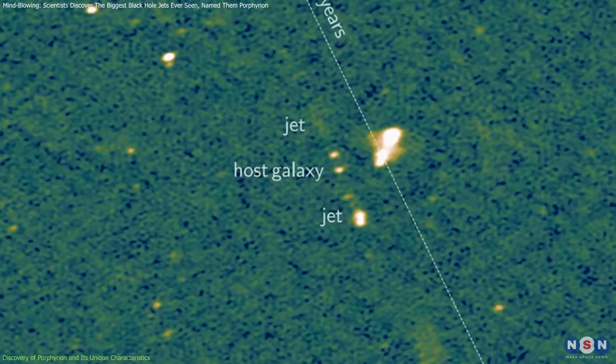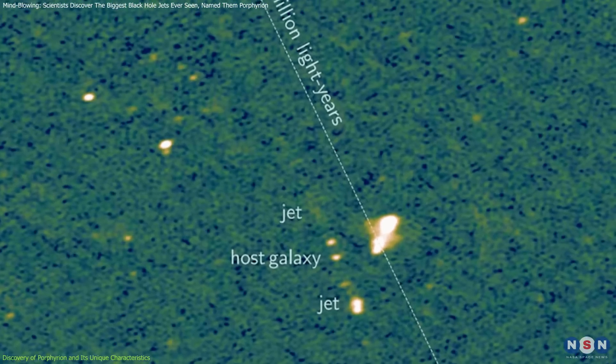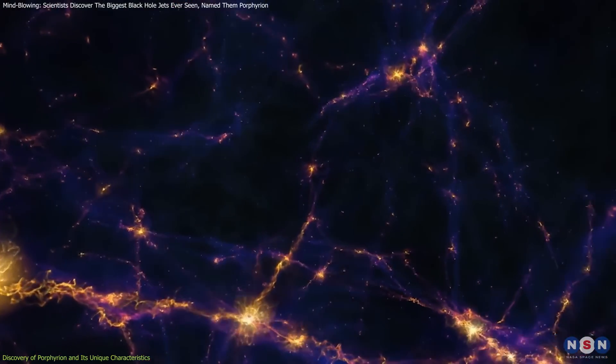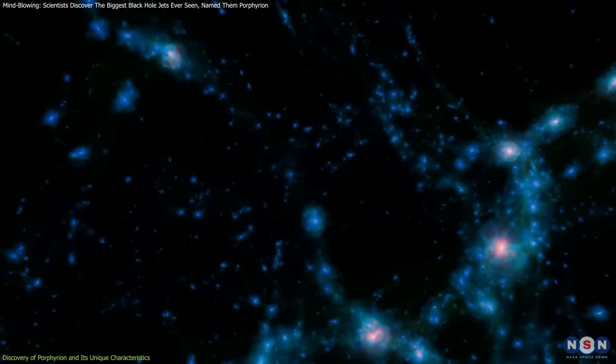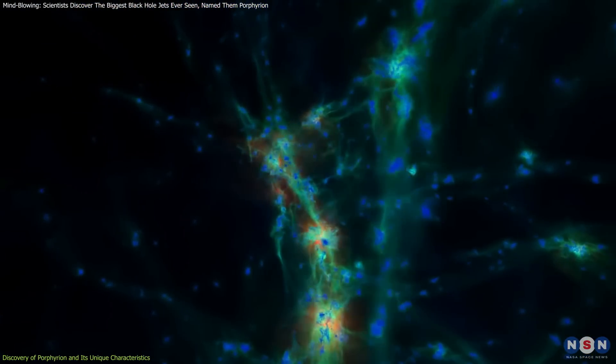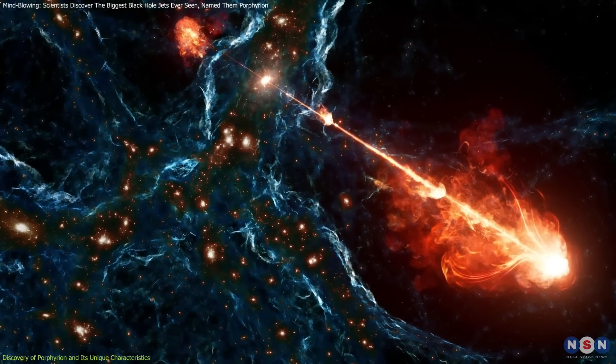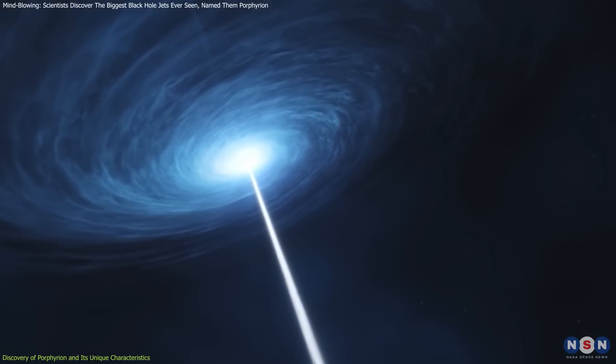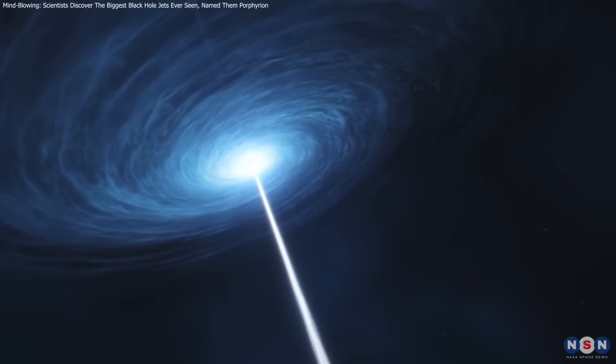This discovery sheds light on a crucial era in cosmic history. These jets formed when the universe was only about 6 billion years old, during a time when the cosmic web, the vast network of gas and dark matter connecting galaxies, was much denser. This ancient environment likely played a role in the jets' immense size, allowing them to reach farther than they would in the present-day universe.